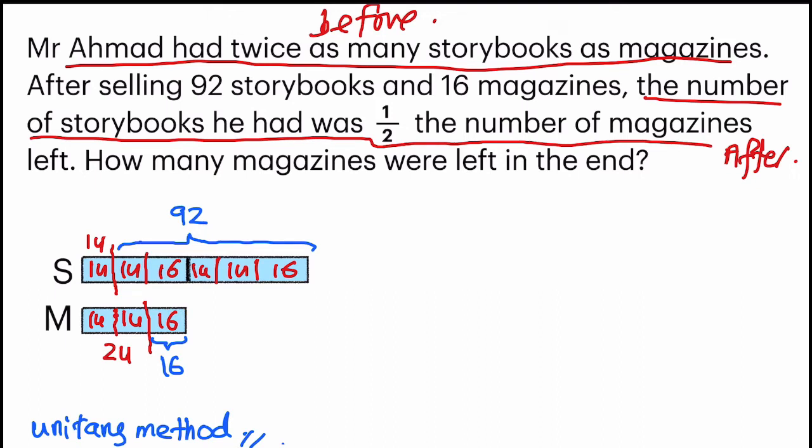From here on, it's a bit easier because you're going to do the comparison. So observe this part of the model. 92 is equals to all of this here. And how can I find one unit? Is it possible?